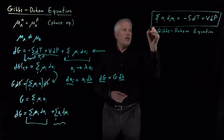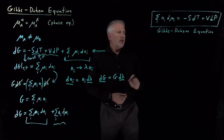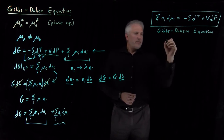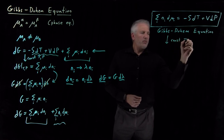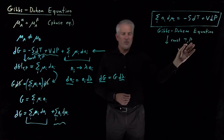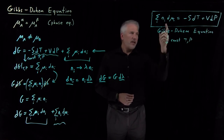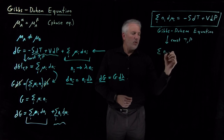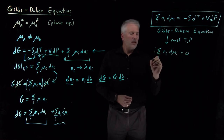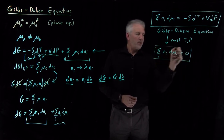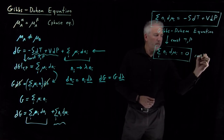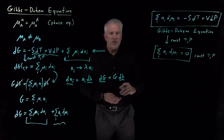This is the more general form of the Gibbs-Duhem equation. Sometimes we use it at constant temperature and pressure. If dT equals zero and dP equals zero, it simplifies to: the sum of moles times changes in chemical potential equals zero. So at constant temperature and pressure, Σ nᵢ dμᵢ = 0.